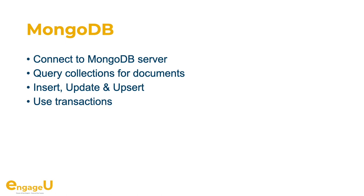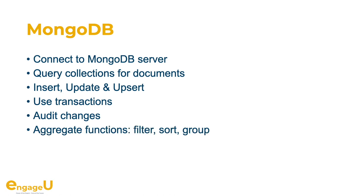You can use transactions with our plugin to create several records in different collections and write them all together, or fail with an error if something goes wrong. We also have a watch feature where you can watch for changes and provide an audit log. You can use aggregate functions like filter, sort, and group in your queries, and we have plenty of TLS options for encryption for the connection. We also have time functions to help you convert FileMaker times to and from MongoDB. If your clients have MongoDB servers and you need to push data between MongoDB and FileMaker, our plugin should be an excellent option.